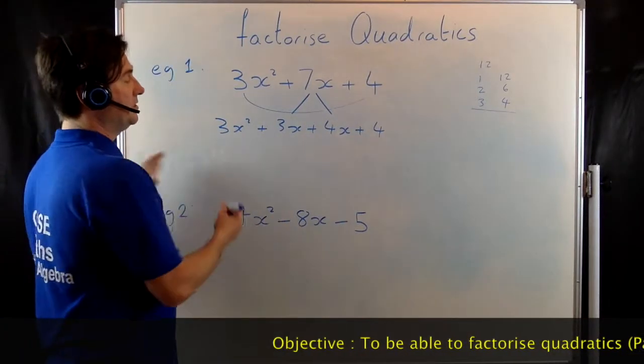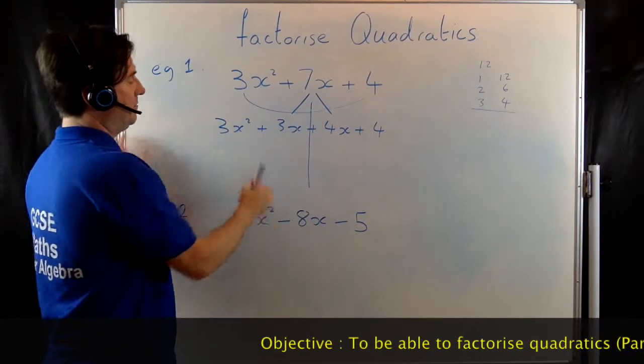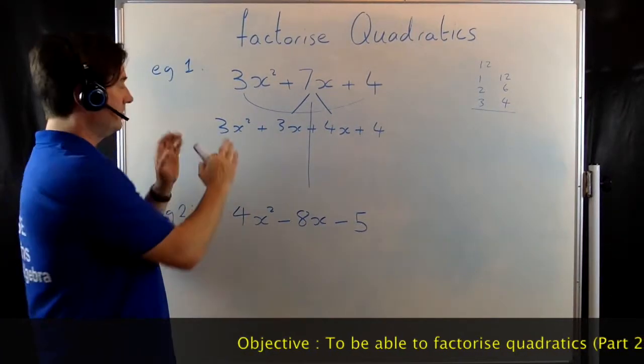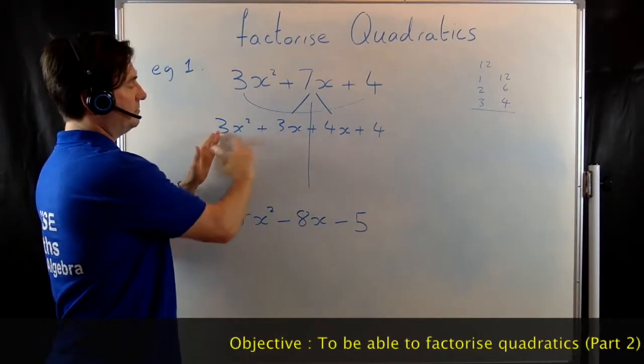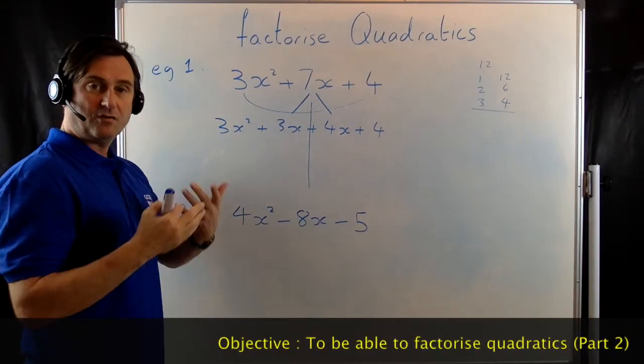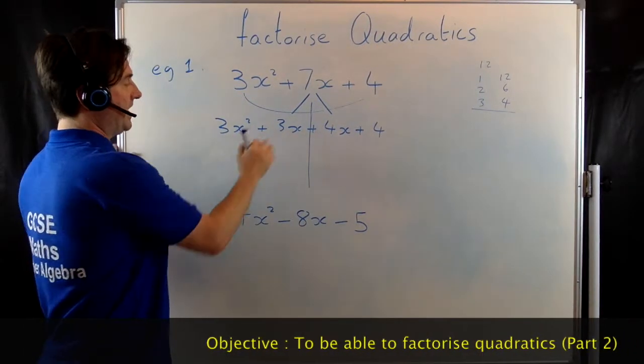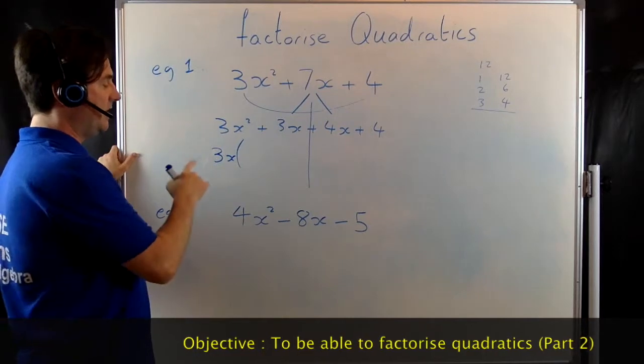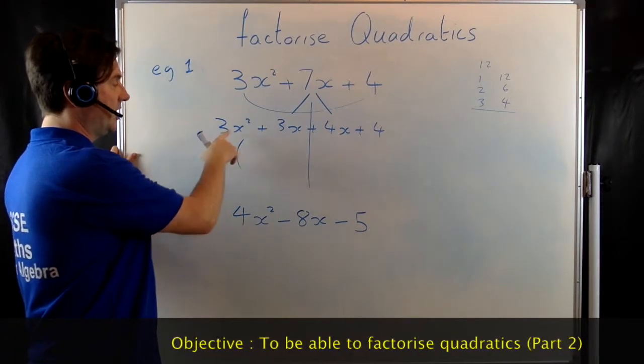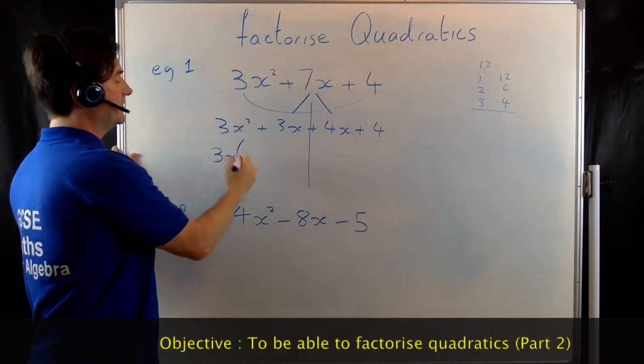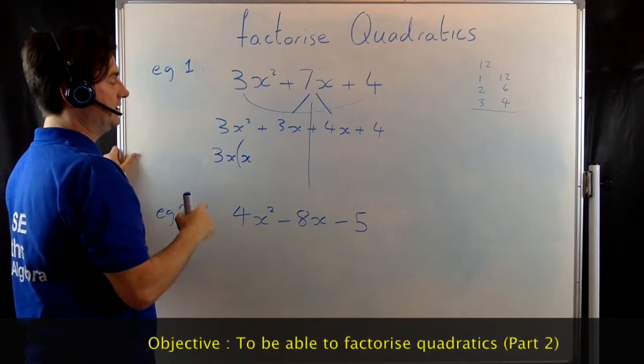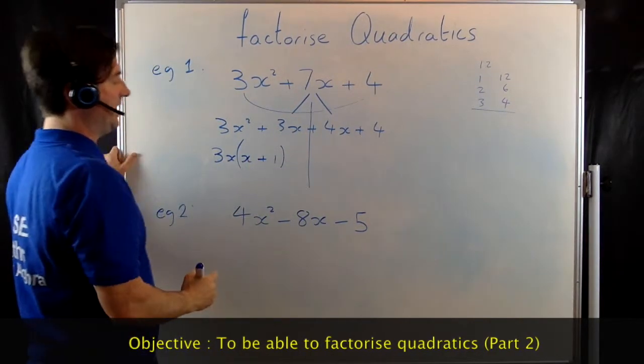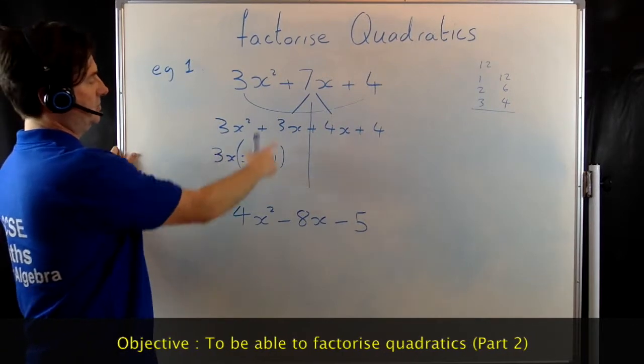The next thing we're going to do is we're going to do what's called pairing. We're going to split it down the middle and we're going to have this pair and this pair. And each pair is going to be factorised individually. So look at this pair here, 3x squared plus 3x. Look for a factor of both of those terms. 3x occurs in both. So I'll write 3x and open up a set of brackets. Now what goes inside these brackets so that I can factorise this correctly. So 3x times x gives me 3x squared and 3x times 1 gives me 3x.